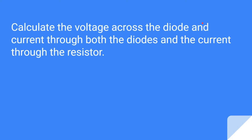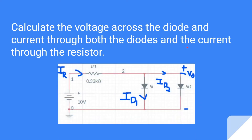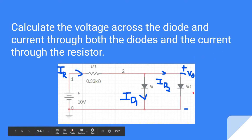Hello everyone. In this video we will be discussing another example. The question is: calculate the voltage across the diode, the current through both diodes, and the current through the resistor. We are given a resistor and two silicon diodes, and we need to calculate the current through the resistor, the current through both diodes, and the voltage across the diode.